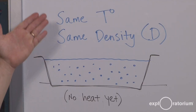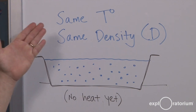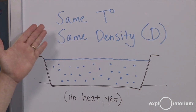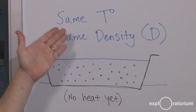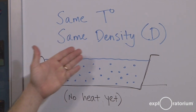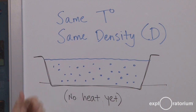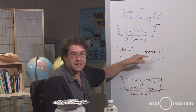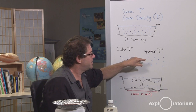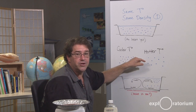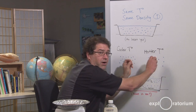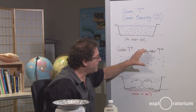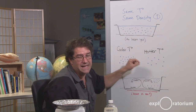Let me use some diagrams to show you what I mean. When you first mix your solution, it's going to be about the same temperature throughout and the same density throughout. When you put the heat on, the fluid that's closest to the heat source gets more energy. Those molecules move apart, making that portion of fluid less dense.